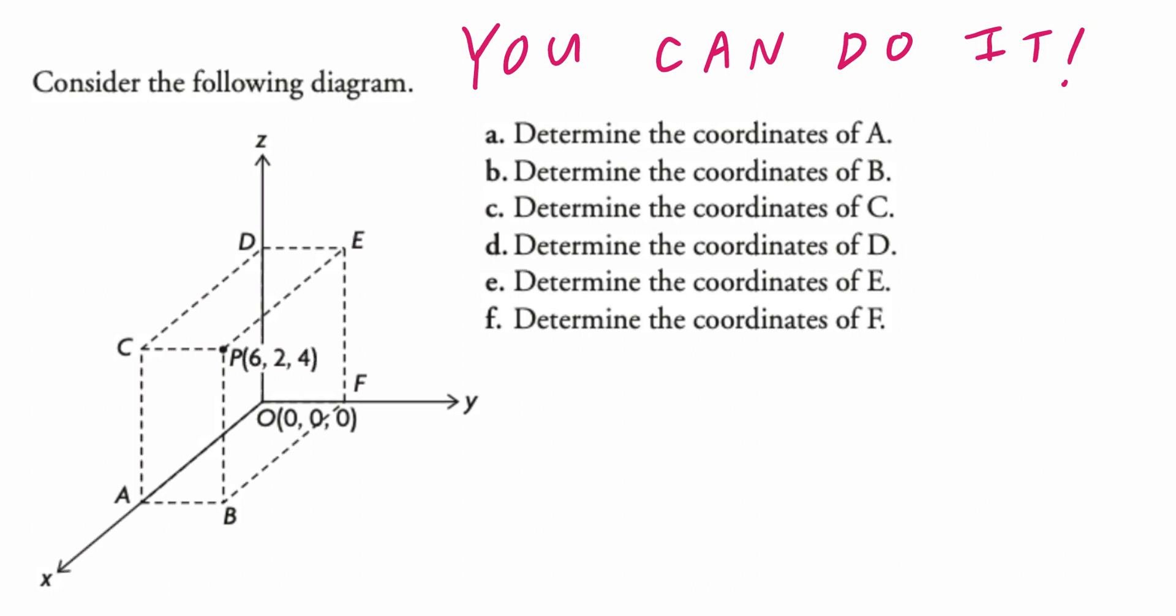Hi everyone! Let's take a look at the following example. Consider the following diagram. In parts A, B, C, D, E, F, they're asking you to determine the coordinates of A, B, C, D, E, F. Step one, look at this point (6, 2, 4). Look at this point (0, 0, 0), also known as the origin.